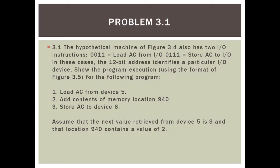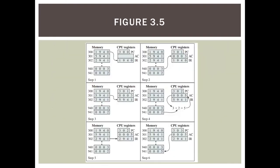Assume that the next value retrieved from device 5 is 3, and that location 940 contains a value of 2. Before I answer this question, I will try to explain how the memory works. This is Figure 3.5. As you can see, in step 1 there is memory and CPU registers. Memory contains an address like 300 and its value — for example, 300 has value 1940. The CPU registers contain PC, AC, and IR: PC means program counter, AC is accumulator, and IR is instruction register.